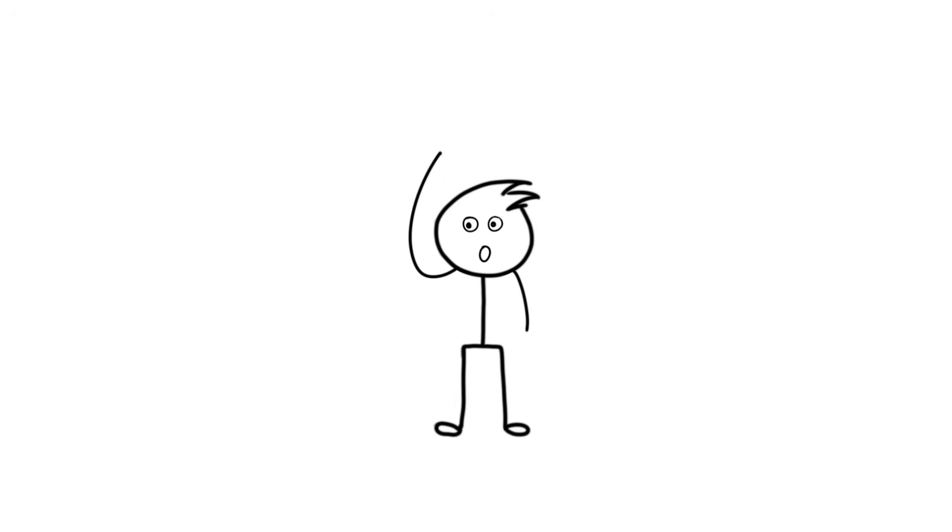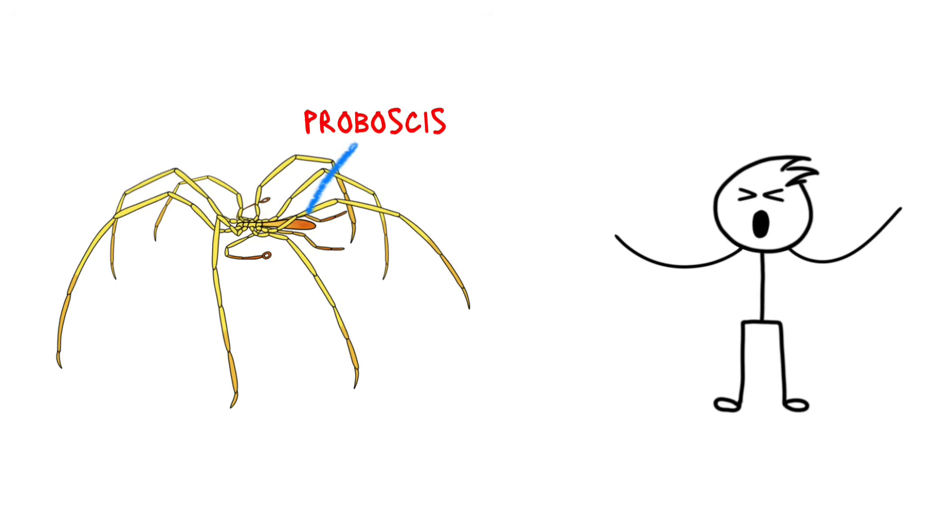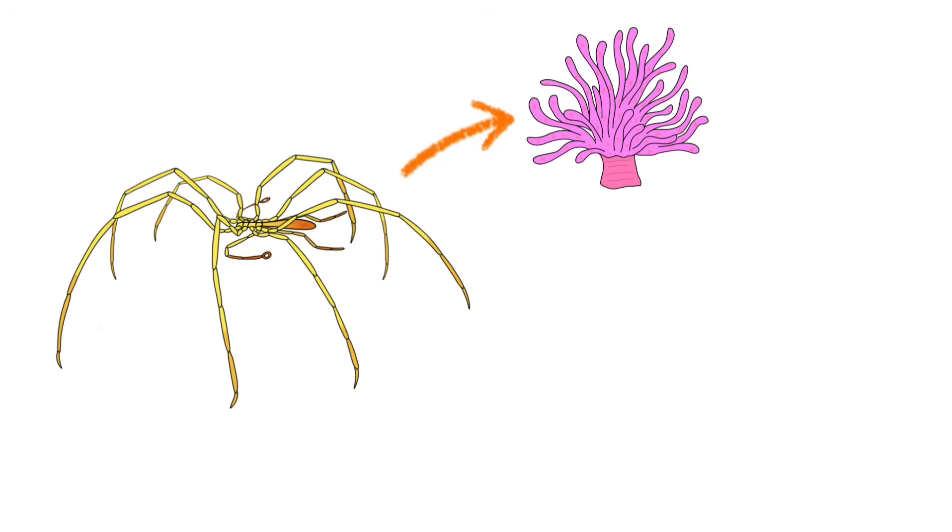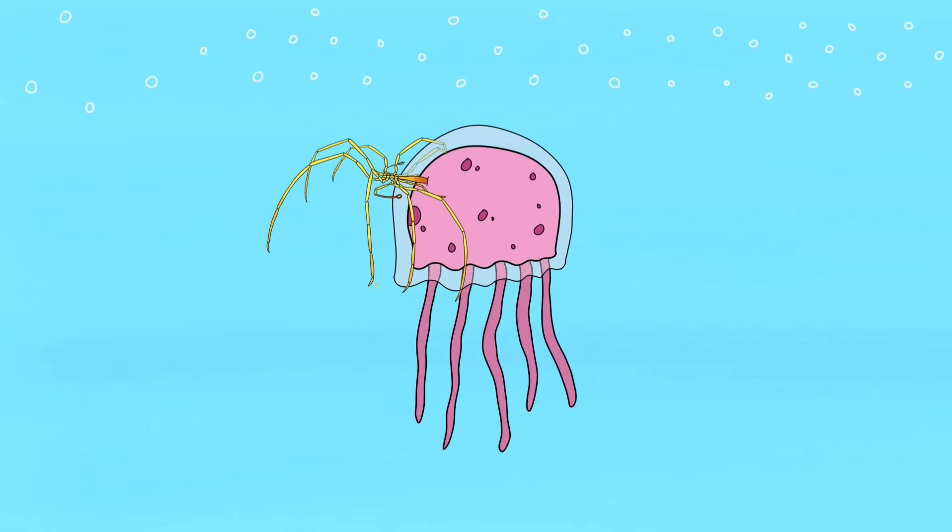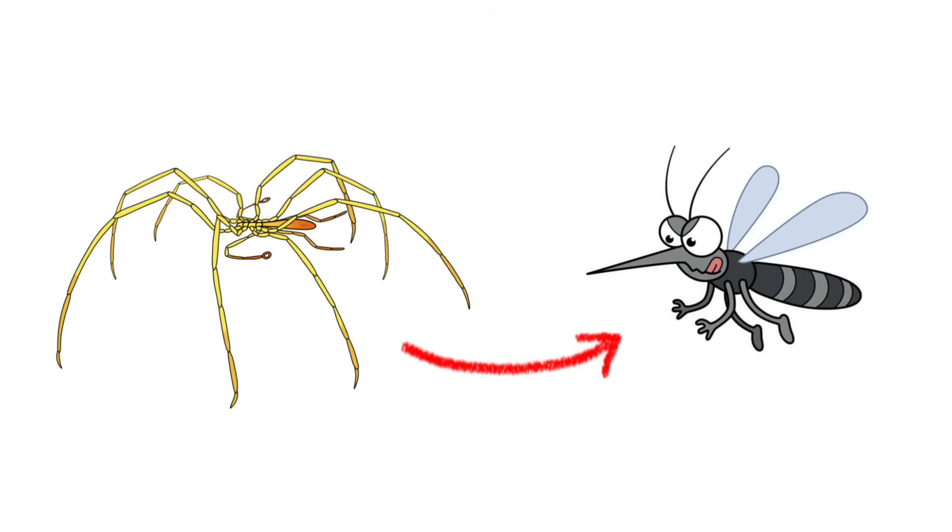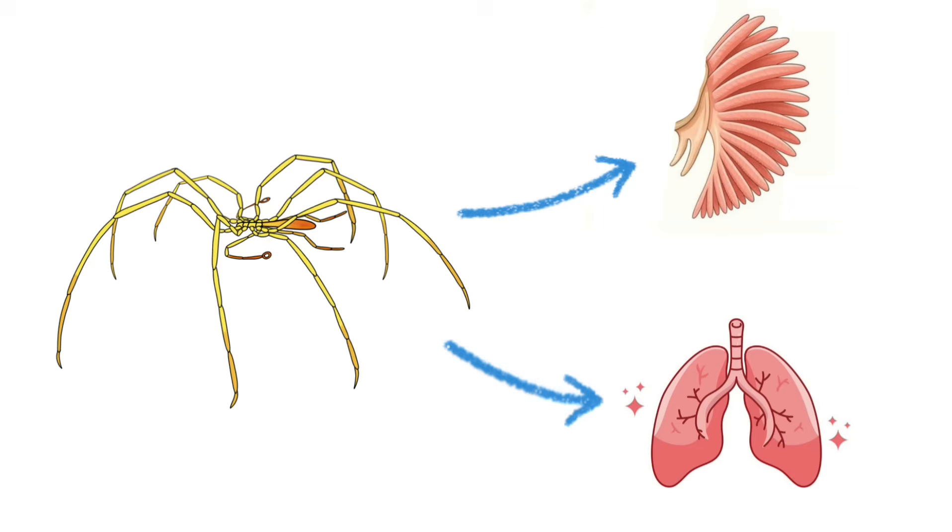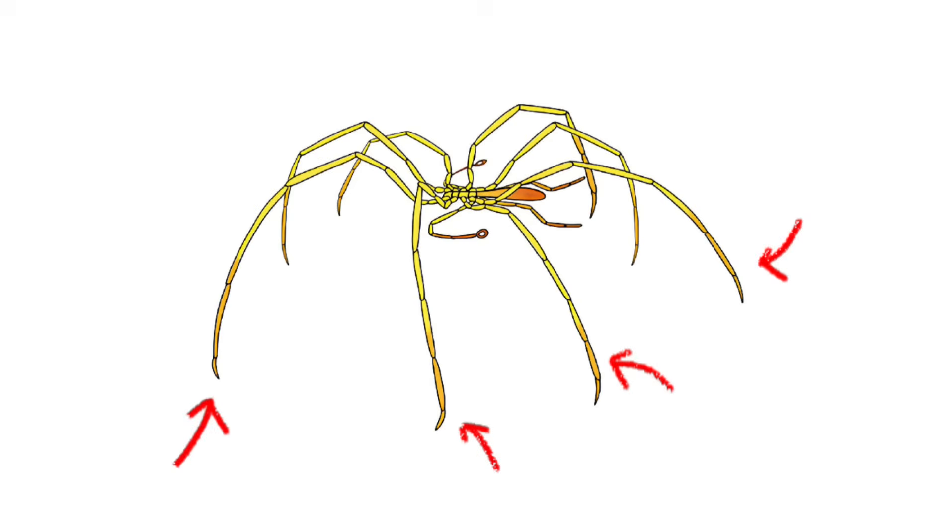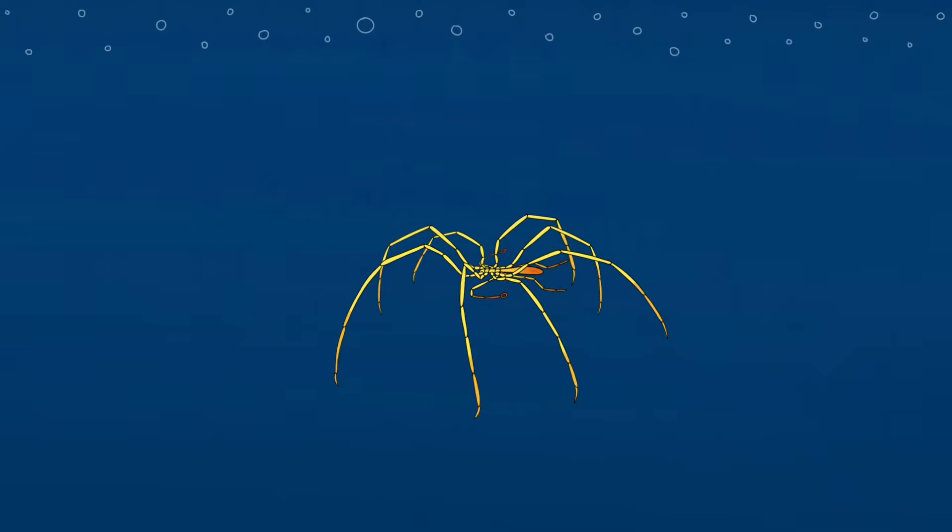And talking about sucking, sea spiders have a pipe for a mouth. This proboscis is used to pierce soft creatures like sea anemones, sponges, and jellyfish, and suck the juice out of them. So they are kinda like mosquitoes of ocean. And since they are so thin, they don't need gills or lungs. They absorb oxygen directly through their legs through diffusion. And it works great when you are over 95% legs.